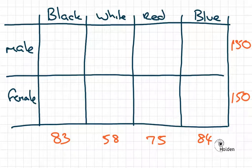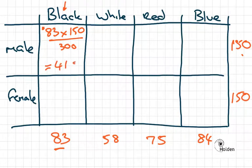So we had 83 people who chose black t-shirts. There were 150 of them male, 150 of them female. If we're looking at the probability of getting a male wearing a black t-shirt in an ideal world, we would be looking at 83 times 150 divided by the total number of people. So 83 times 150 divided by 300 is 41.5.